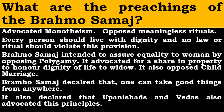What are the preachings of Brahma Samaj? Brahma Samaj advocated monotheism. It opposed meaningless rituals. Every person should live with dignity and no law or ritual should violate this provision. Brahma Samaj intended to assure equality to women by opposing polygamy. It advocated for a share in property and dignity of life to widows. It also opposed child marriage. Brahma Samaj declared that one can take good things from anywhere, and that the Upanishads and Vedas also advocated these principles.